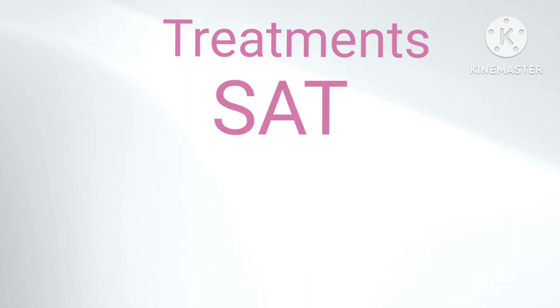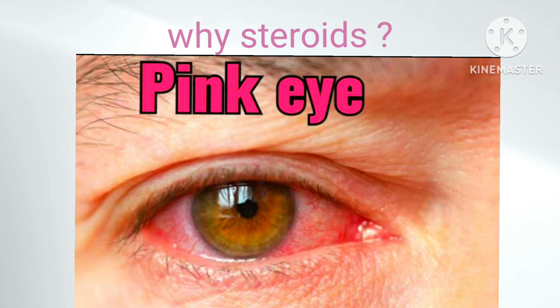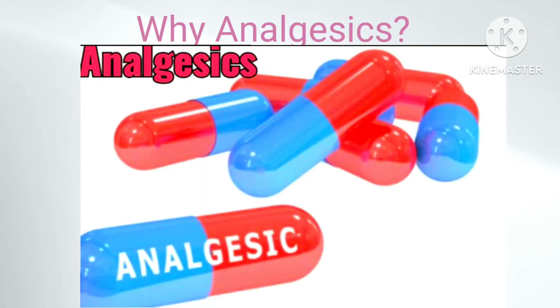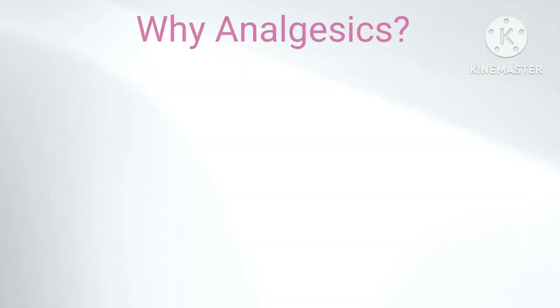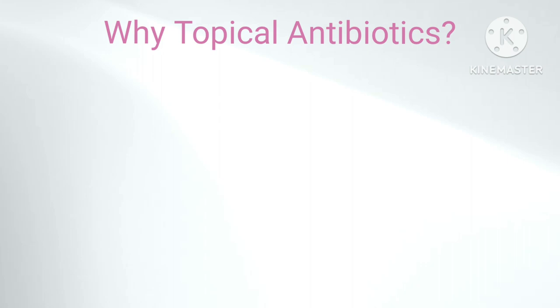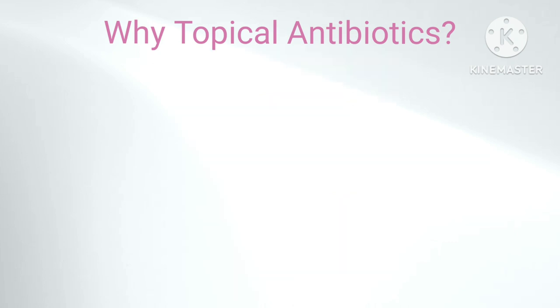Treatments. An acronym for the treatment is S.A.T., which you can easily remember. The S stands for steroids, A stands for analgesics, and T stands for topical antibiotics. Anti-inflammatory drugs like steroids are prescribed to treat pink eye since it is an inflammatory disease. The most commonly used steroid is dexamethasone. Analgesics are also prescribed to relieve the pain. Topical antibiotics are prescribed as bacterial conjunctivitis is caused by bacteria, applied to kill the bacteria and prevent secondary infection.